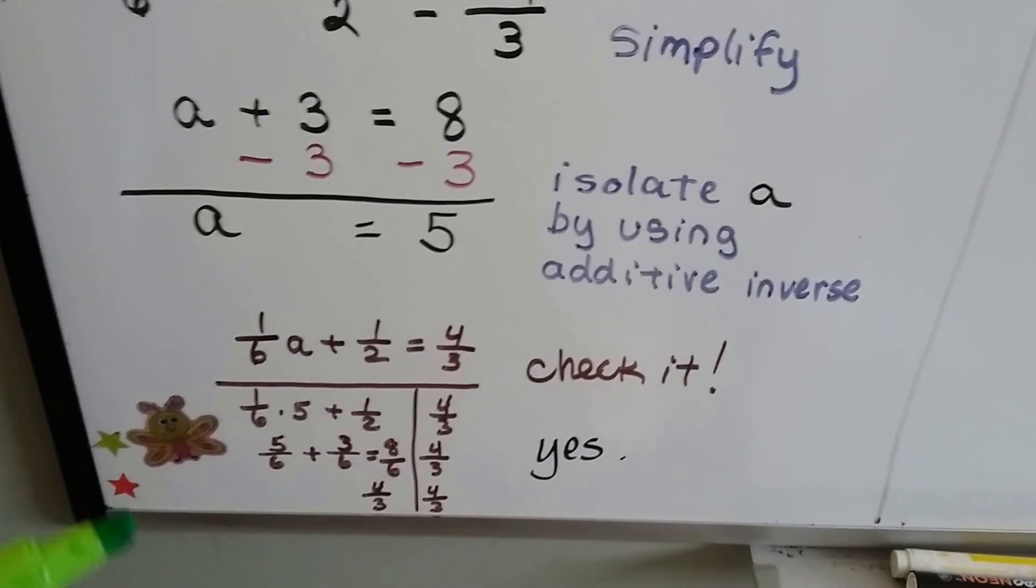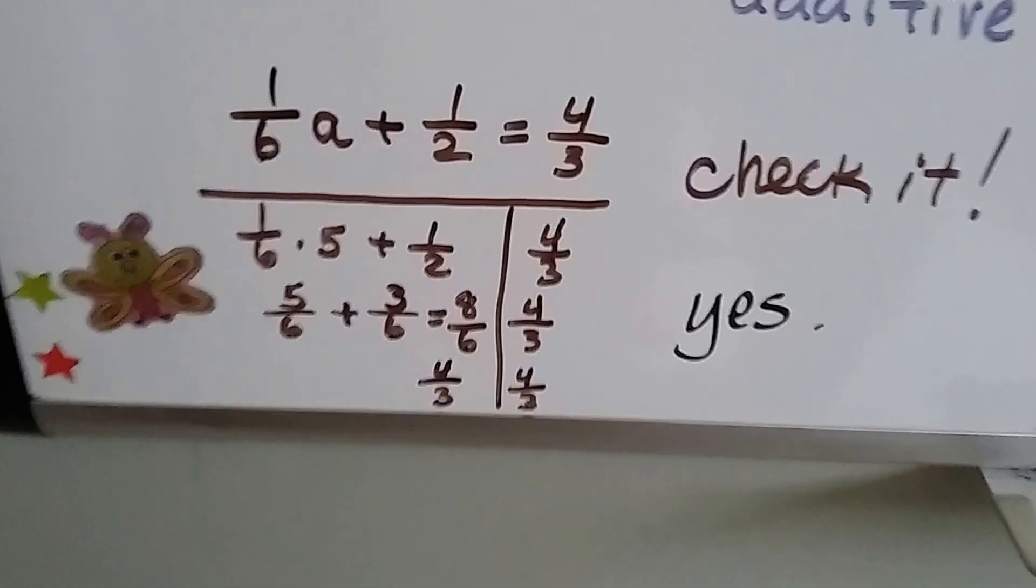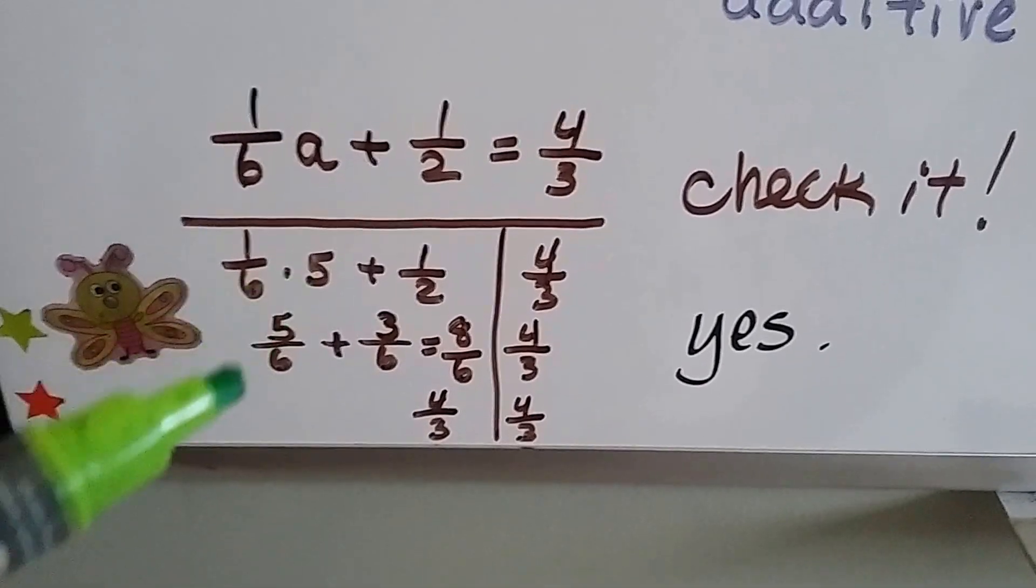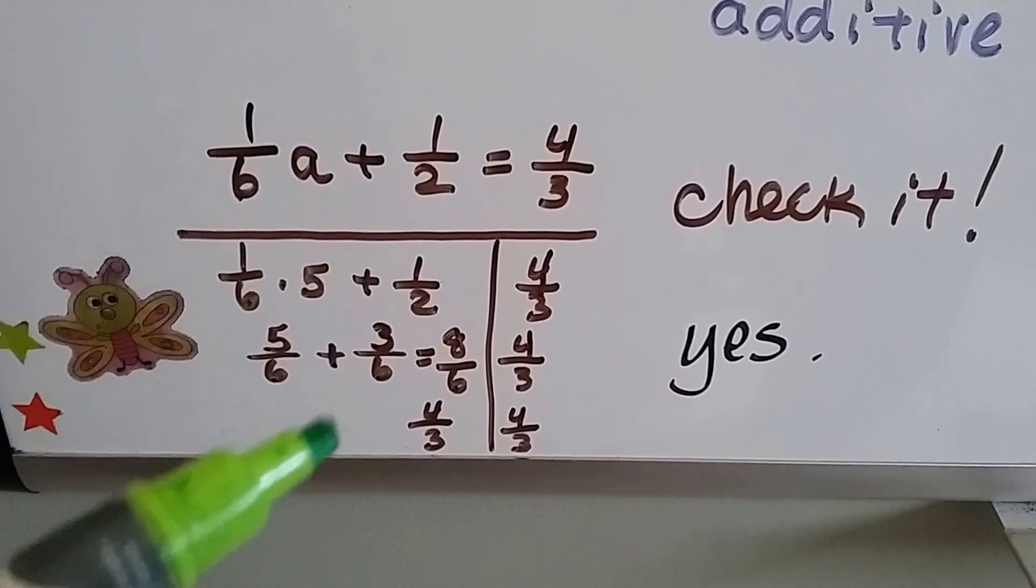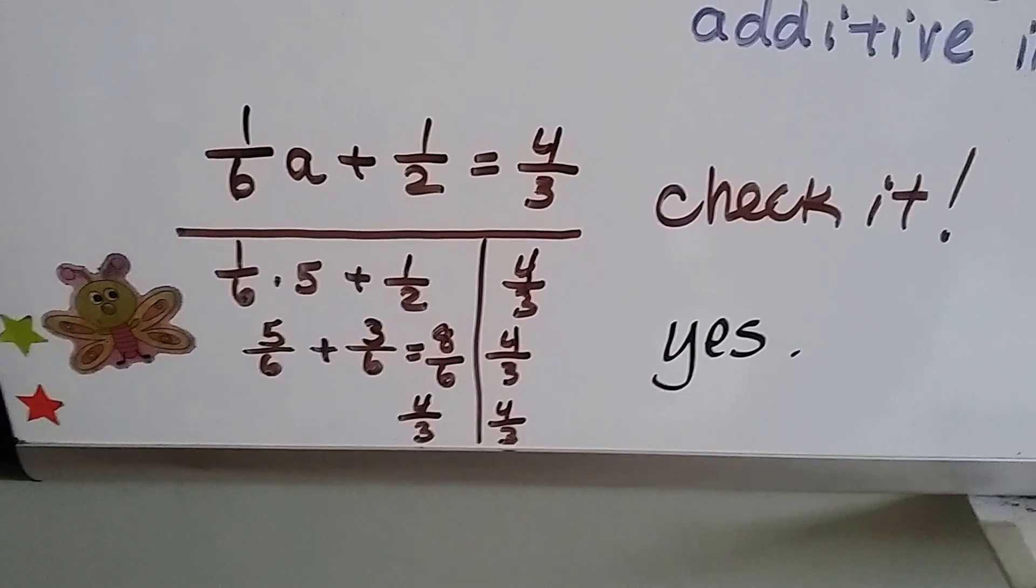Now we can check this by plugging in 5 for a, and we can see that it does work out. That makes 5/6, and when we add that, we end up getting 4/3 on each side.